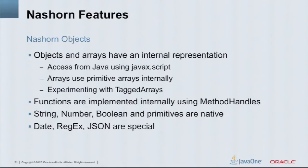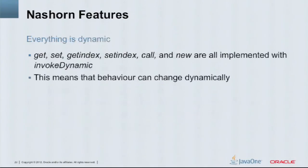Strings, numbers, booleans, and primitives are all native. If you pass a Java string into NASHORN, it treats it like a JavaScript string, and the JavaScript string goes back the other way — they're one and the same. Same with booleans and numbers. Date, regex, and JSON are special — there are special raw objects for those, mostly to gain performance, but there are accessors for getting them from the Java side. Everything was based on using JSR 292 as much as possible, so whenever you do a getter or setter operation, use indexing, make a call, or create a new instance, that's all using invokedynamic, which means at runtime that section of code can be replaced with whatever we want.